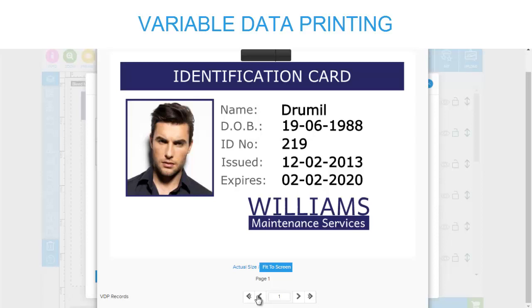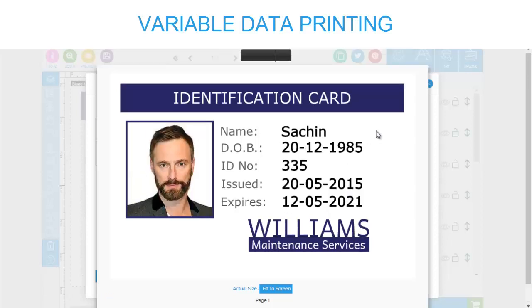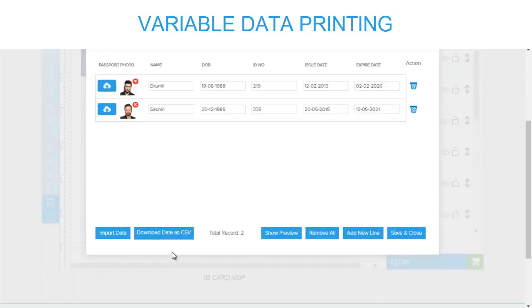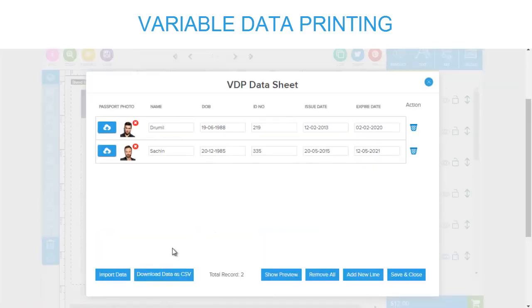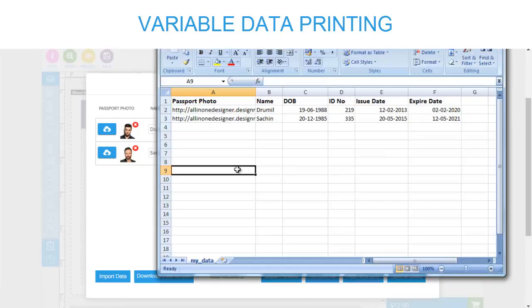You can watch their previews to get the look and feel of your product, and once done, you can even download the file for later use — a CSV file is saved with all the data you entered manually.